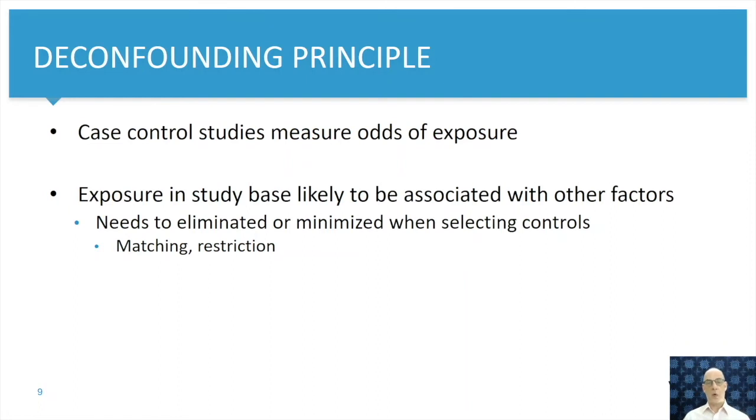But that is not always possible. Another tool, therefore, is restriction. For example, if we know that age is really confounding the association between our exposure of interest and our outcome, we can make sure that we restrict our study population to a certain age group. Because within a restricted age group, the effect of age itself will be much smaller.